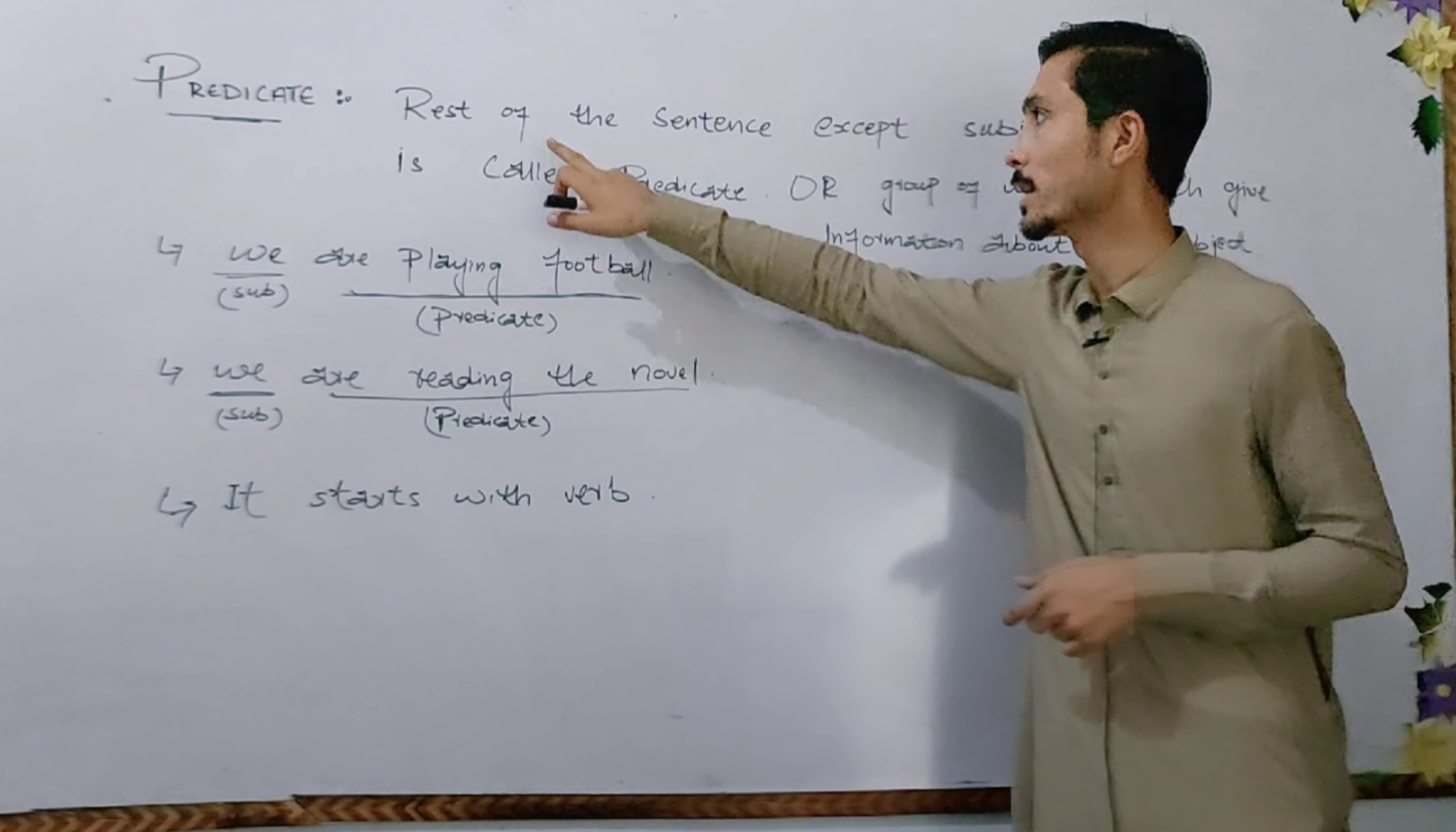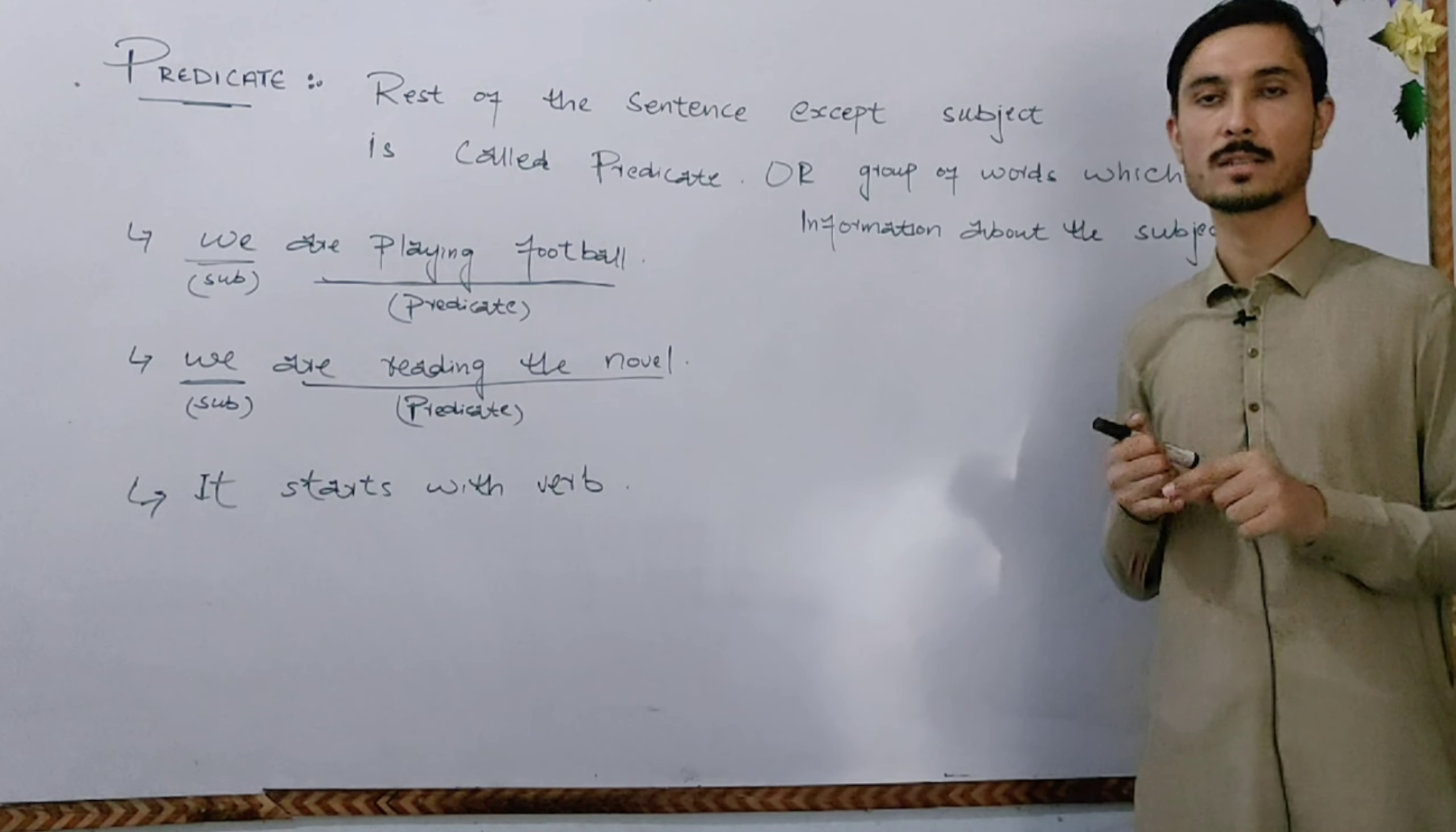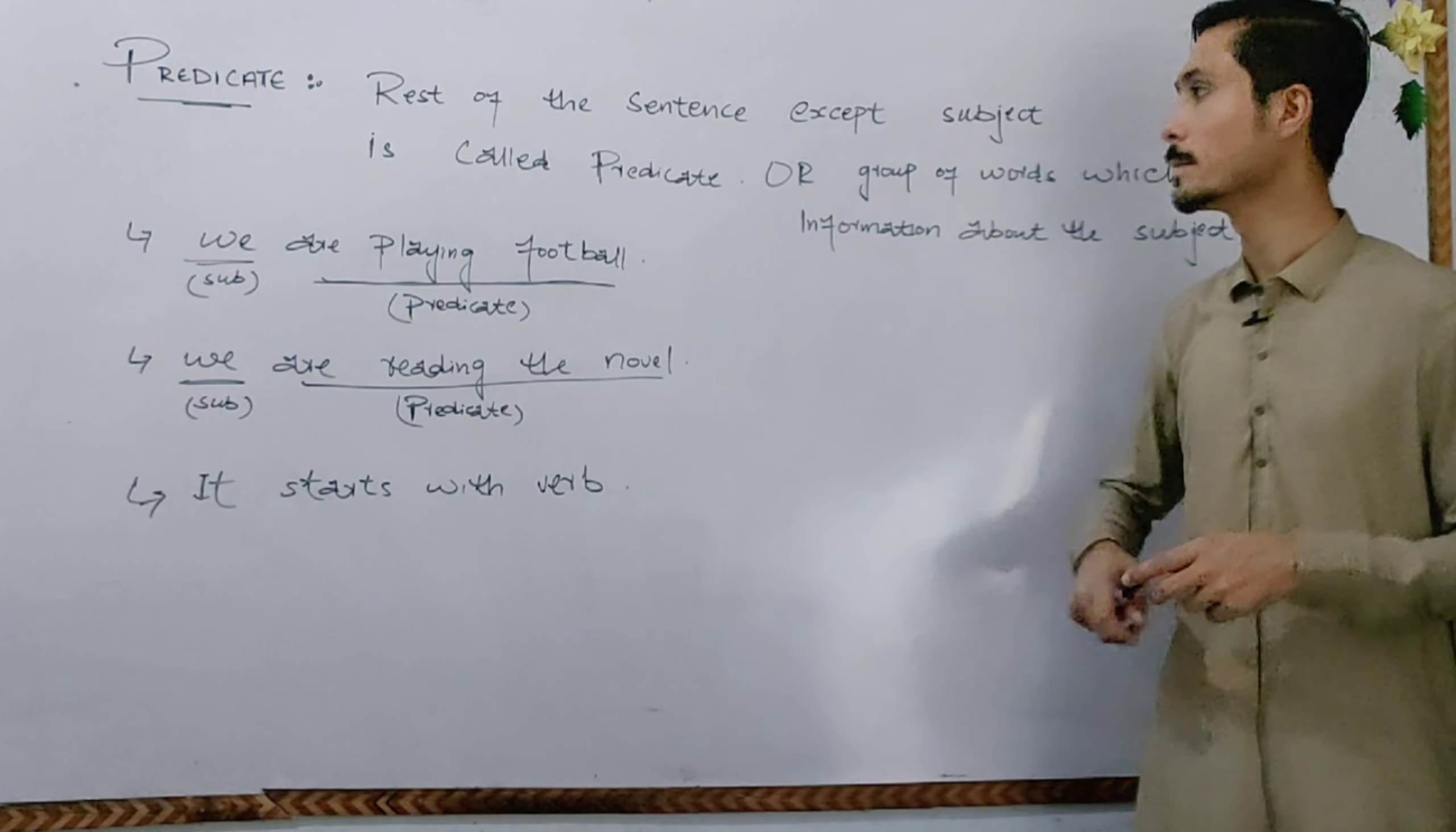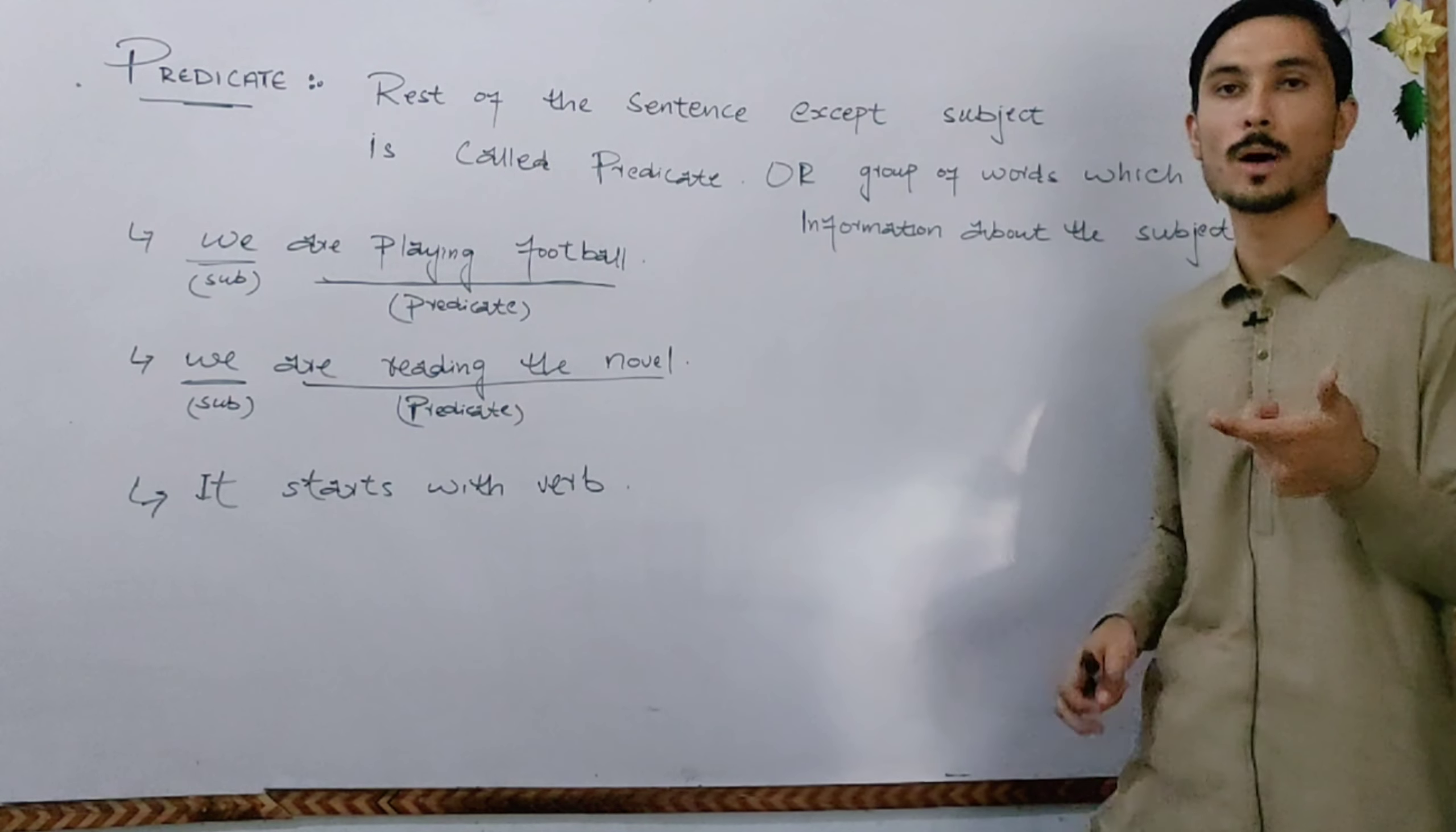So, what does predicate? Rest of the sentence except subject is called predicate. Rest of the sentence except subject is called predicate. Jubhlein e subject ke ilawah, joh alpaz hothi hain ham usse predicate leheta hai. Jesas ke we are playing football, so yohan par subject good football hai.